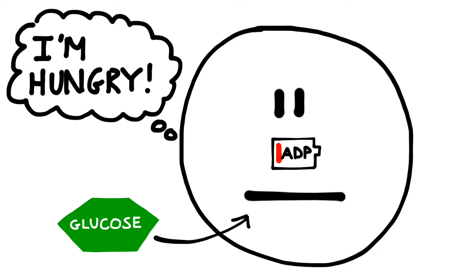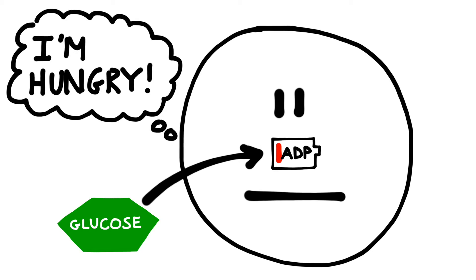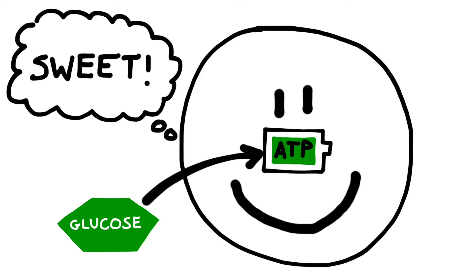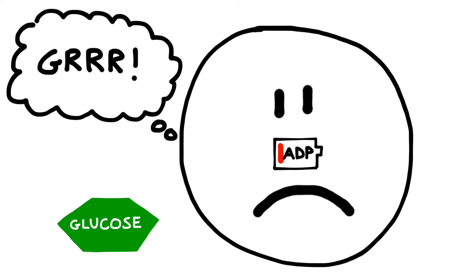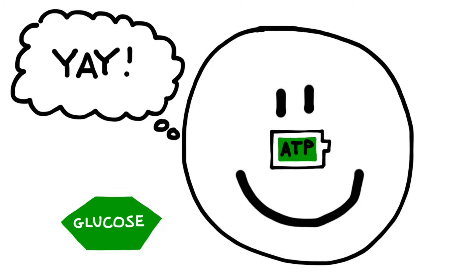Unfortunately for our cells, you can't simply feed them glucose directly. What we can do instead is harness the power of the glucose and use it to recharge low energy molecules of ADP inside the cell. When the energy in the ATP molecule is depleted, it converts back into ADP. Provided that a plentiful supply of glucose is available, we can harness its energy to continuously recharge molecules of ADP into ATP.